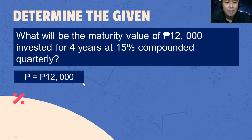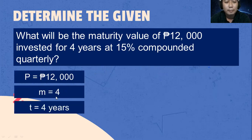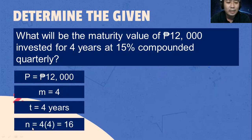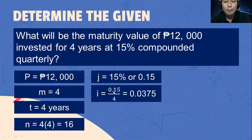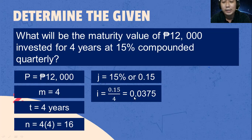The principal amount is 12,000 pesos. The number of compoundings per year M is 4, because it is compounded quarterly. The number of years T is equal to 4 years. In order to get the value of n, that is equal to time multiplied by the number of compoundings per year: 4 times 4, that is 16. J is 15%, or 0.15 in decimal. In order to get the value for i, we divide J by M: 0.15 divided by 4, which is 0.0375.